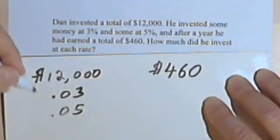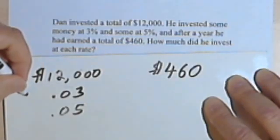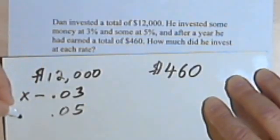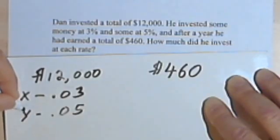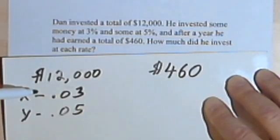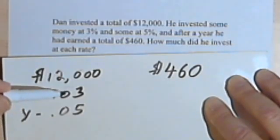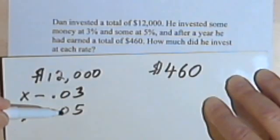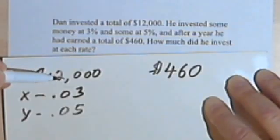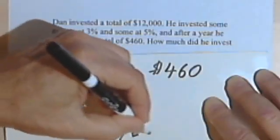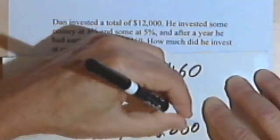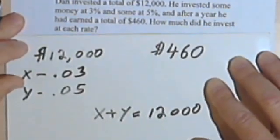And we want to know how much he invested at each rate. So let's call the 3% rate the x rate and the 5% rate the y rate. And we know that x is the amount of money he invested at 3%, and y is the amount of money he invested at 5%. Well those two amounts totaled up to $12,000. So I can say that x plus y equals $12,000.